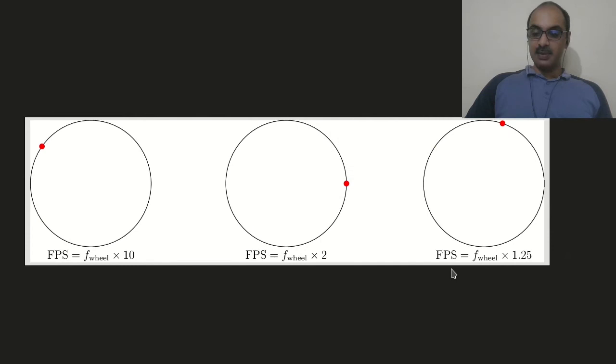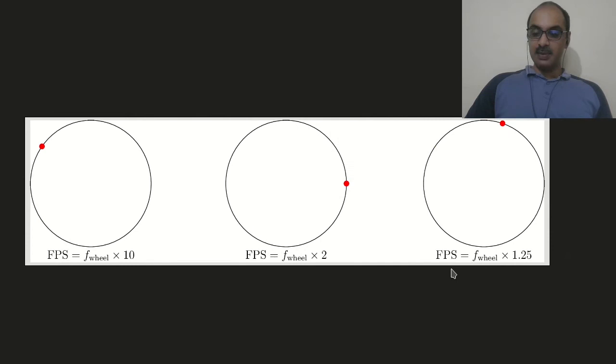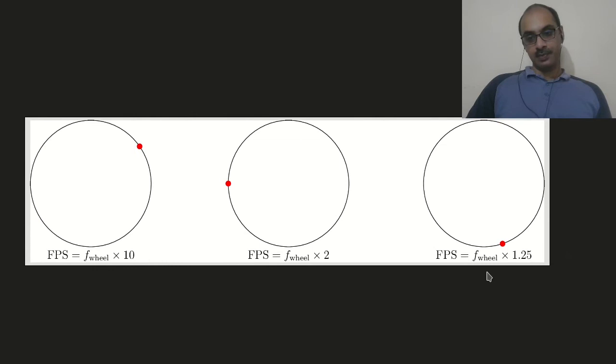Finally, over here, the frames per second is 1.25 times the rate of rotation of the wheel. In this case, a photograph is taken and then the red dot moves 80% of the way. Now why is it 80%? You can calculate that, that is 1 upon 1.25.